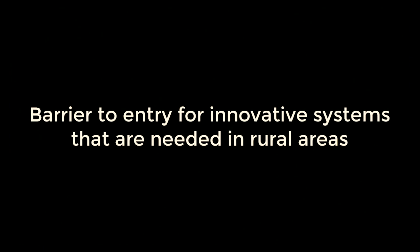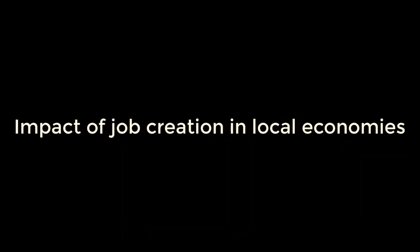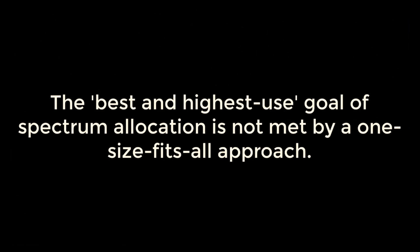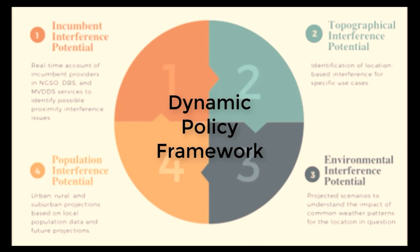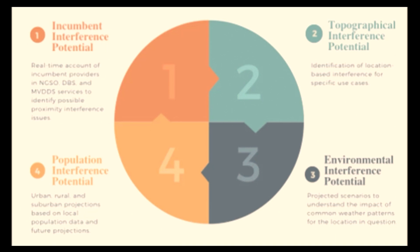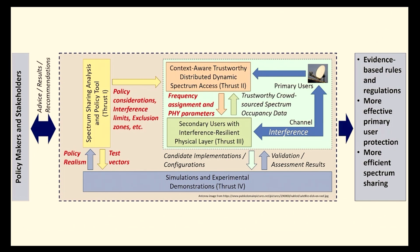These include a barrier to entry for innovative systems needed in rural areas, the impact of job creation in local economies, and how the best and highest use goal of spectrum allocation is not met by a one-size-fits-all approach. A tool or collection of tools that can accurately determine interference potential on a case-by-case basis would allow policymakers to better understand individual scenarios. A collection of tools that funnels data into a digestible analysis framework to identify the best use on a scoring system would reduce blind spots in spectrum sharing and allocation decisions.